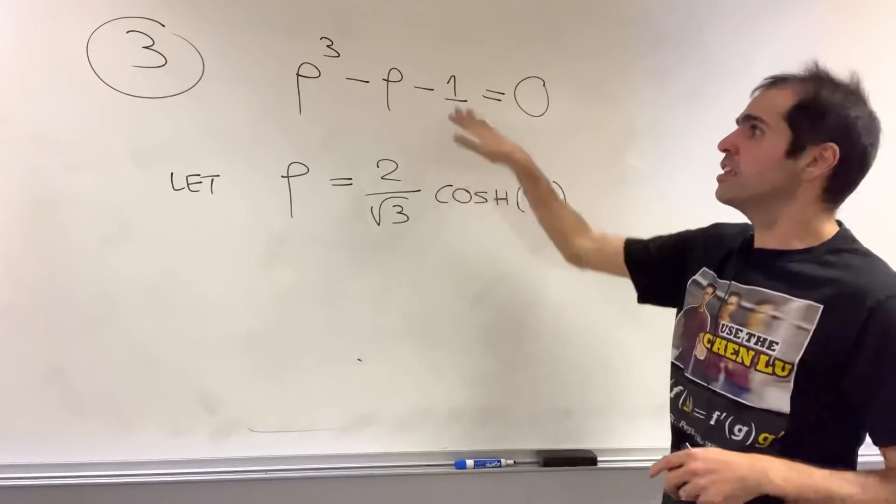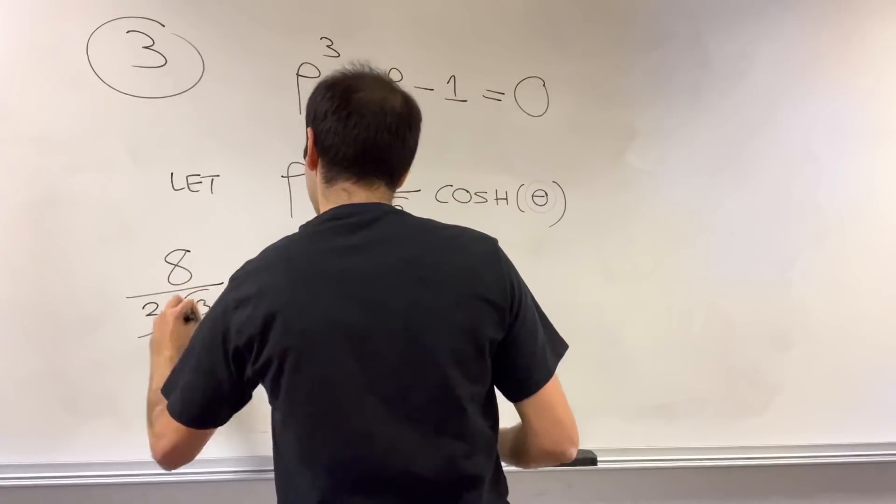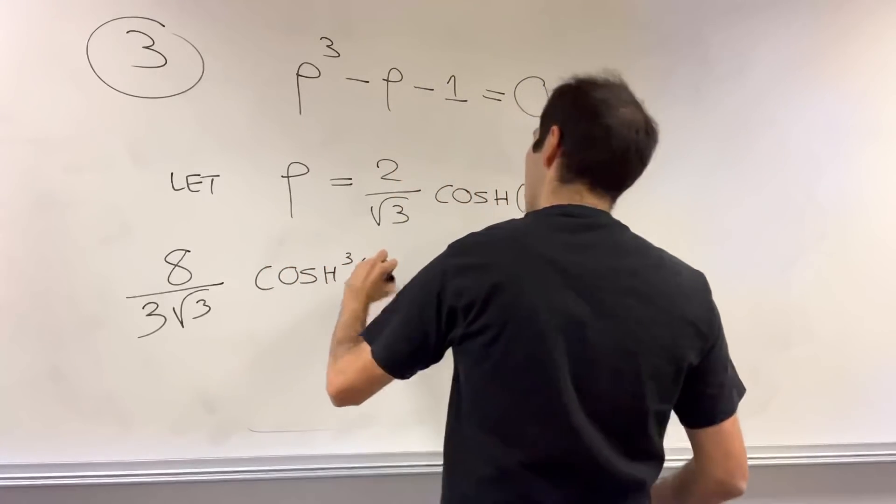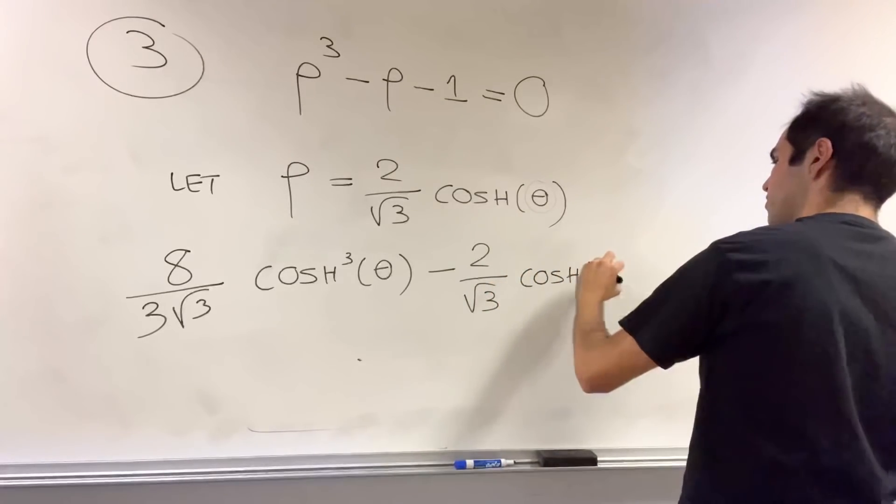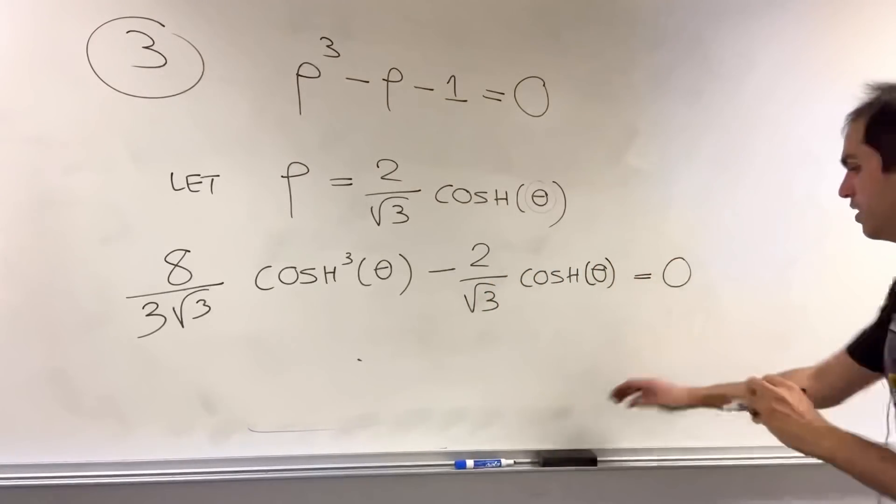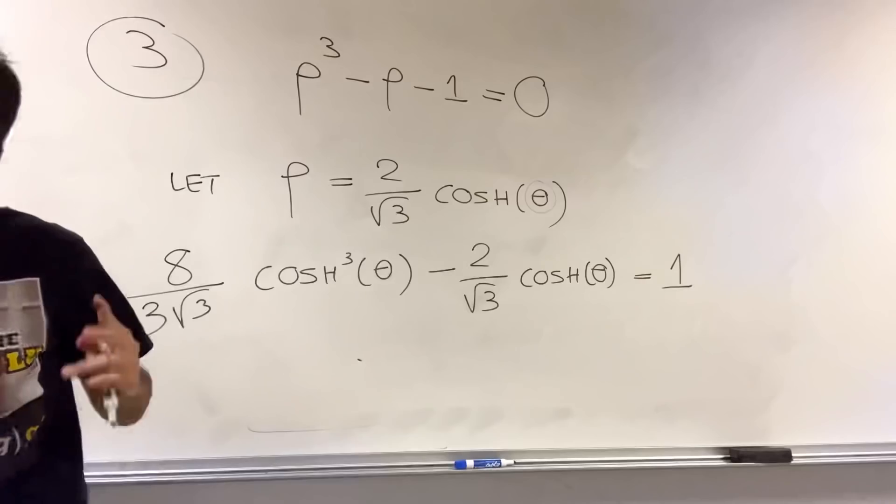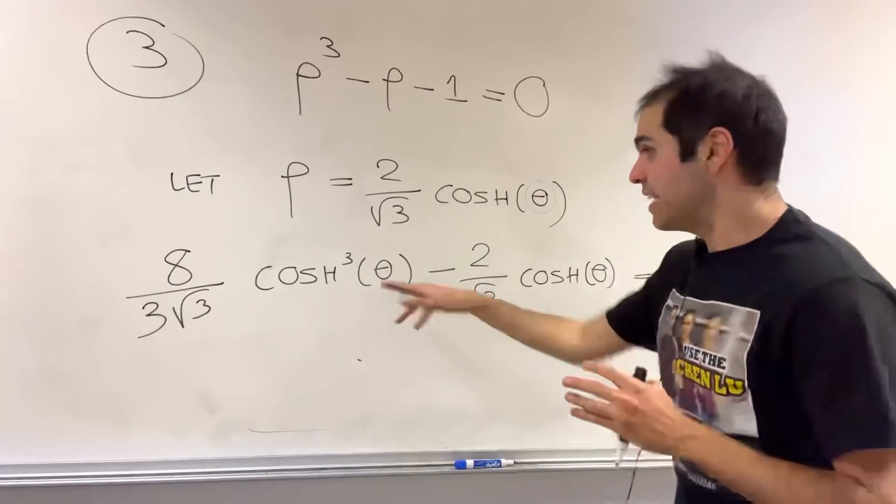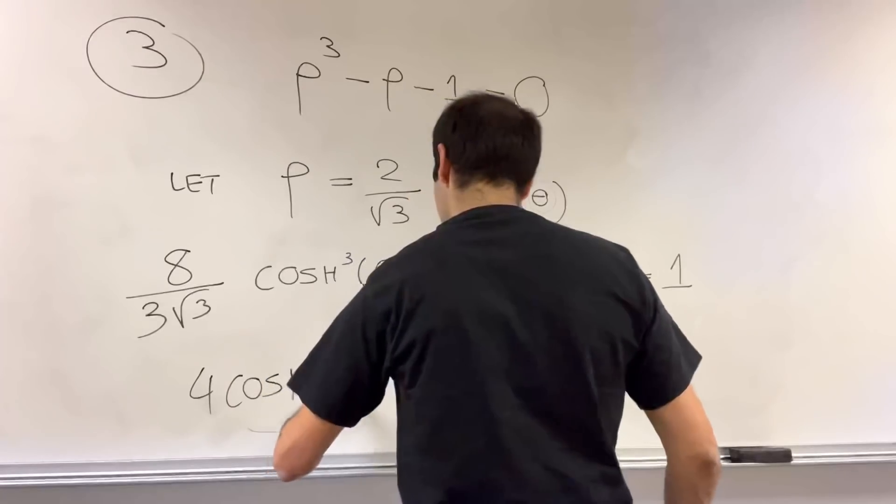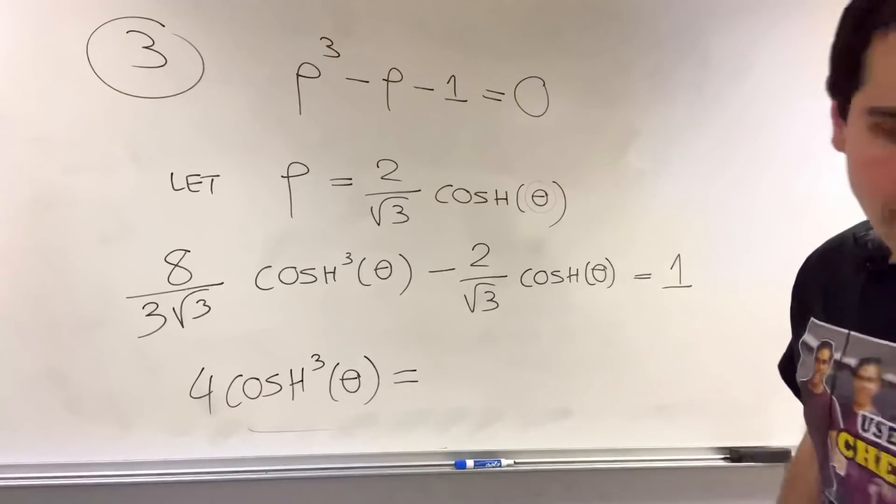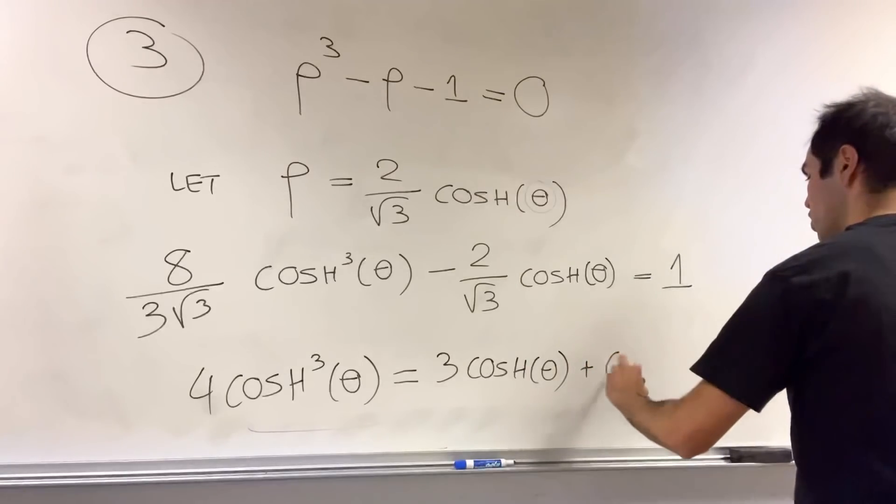And then if you plug this into the first equation, what you get is rho cubed, which is eight over three square root of three, cosh cubed of theta minus rho, so minus two over square root of three, cosh of theta minus one equals zero. And now we need to use an identity that I derived in another video, namely, it turns out four cosh cubed is the same thing as three cosh plus cosh of three theta.